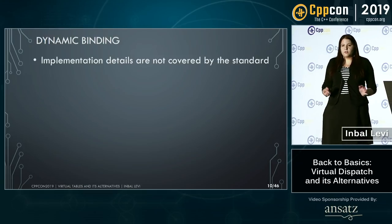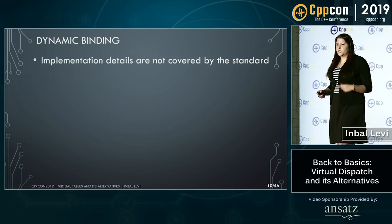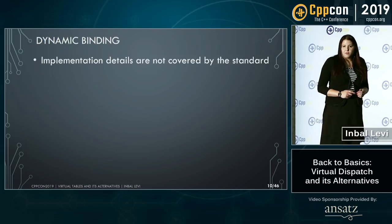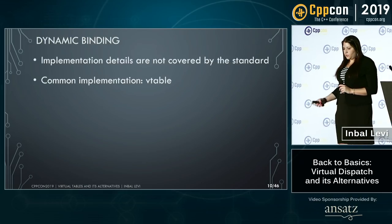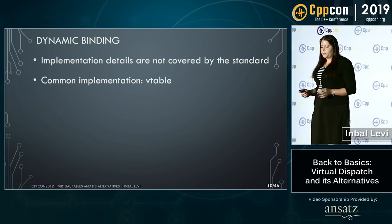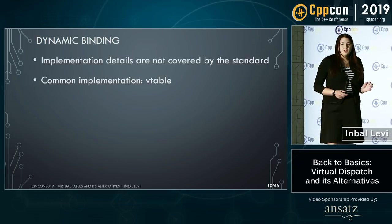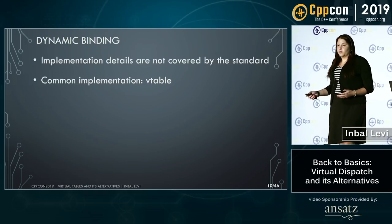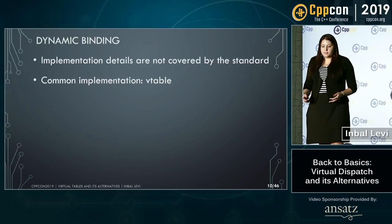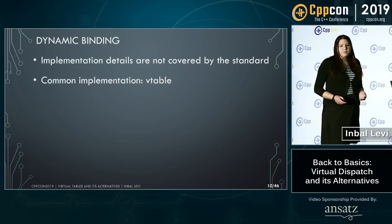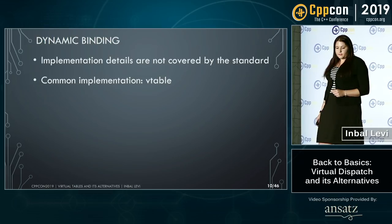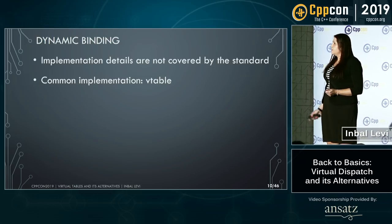Let's go quickly over dynamic binding — we just passed the dispatch from compile time to runtime. Implementation details are not covered by the standard; they appear in the ABI, so basically the compiler can do whatever it wants. But if it follows the ABI, it will probably implement this using the virtual function call table. The common implementation is the virtual table.